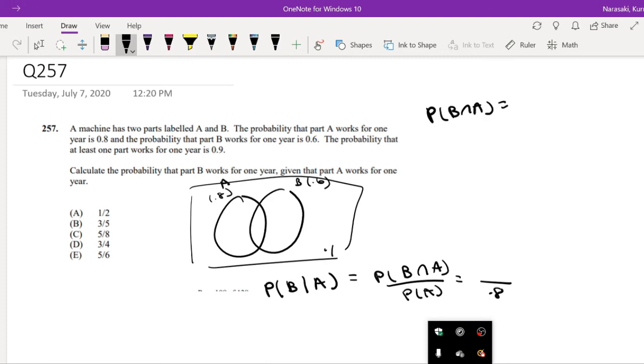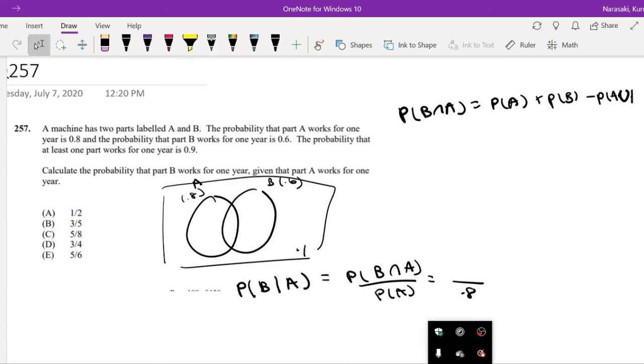This is equal to probability of A plus probability of B minus the probability of A or B, right? And then we know that since the outside is 0.9, the probability that it's A or B is just equal to 0.9, right?